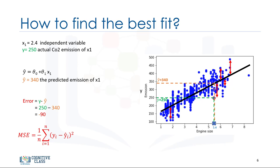Let's reword it more technically. The objective of linear regression is to minimize this MSE equation, and to minimize it, we should find the best parameters theta0 and theta1. Now, the question is how to find theta0 and theta1 in such a way that it minimizes this error. How can we find such a perfect line? Or, said another way, how should we find the best parameters for our line? Should we move the line a lot randomly and calculate the MSE value every time and choose the minimum one? Not really. Actually, we have two options here.